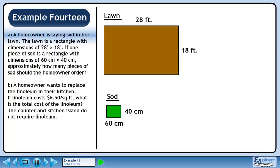A homeowner is laying sod in her lawn. The lawn is a rectangle with dimensions of 28 feet by 18 feet. If one piece of sod is a rectangle with dimensions of 60 cm by 40 cm, approximately how many pieces of sod should the homeowner order?